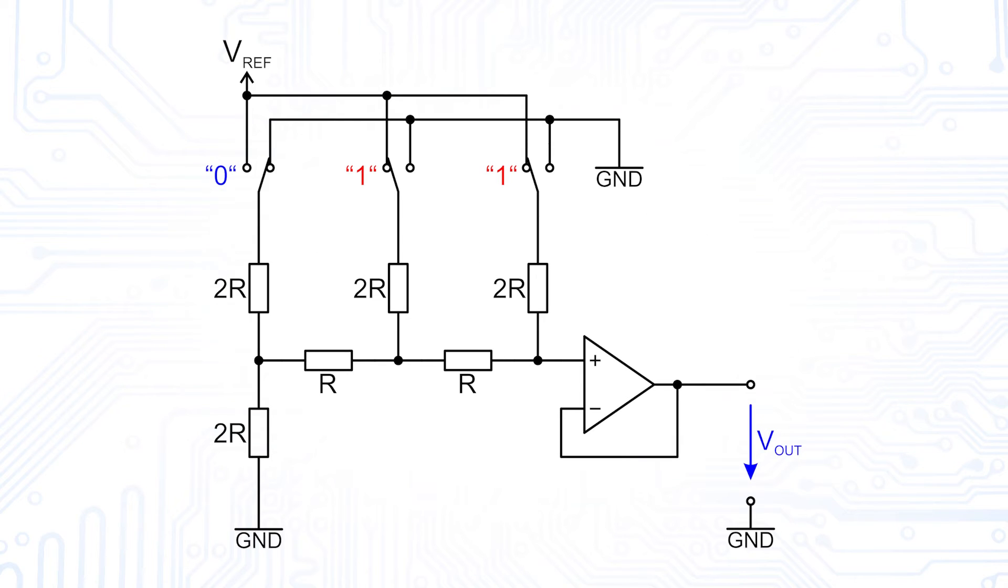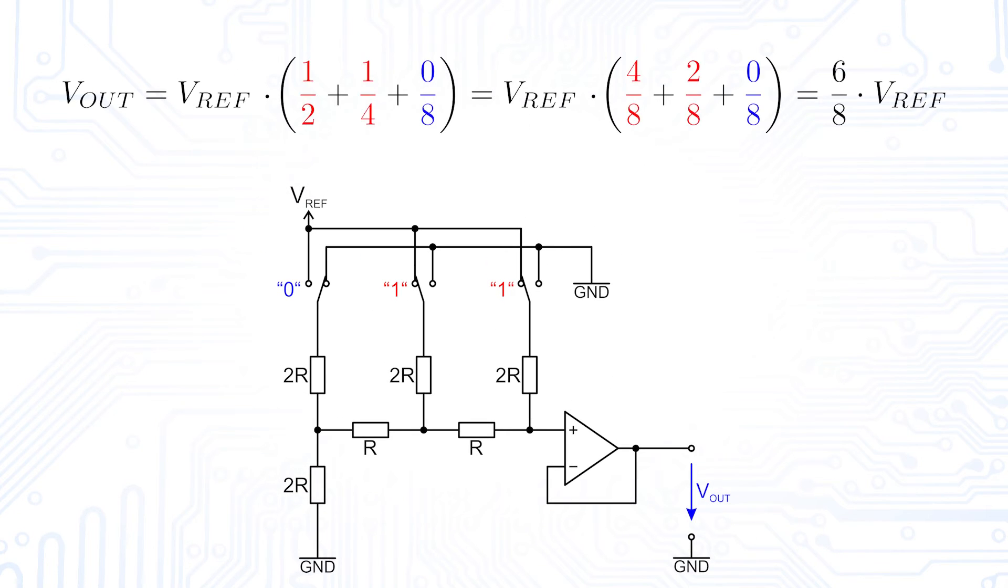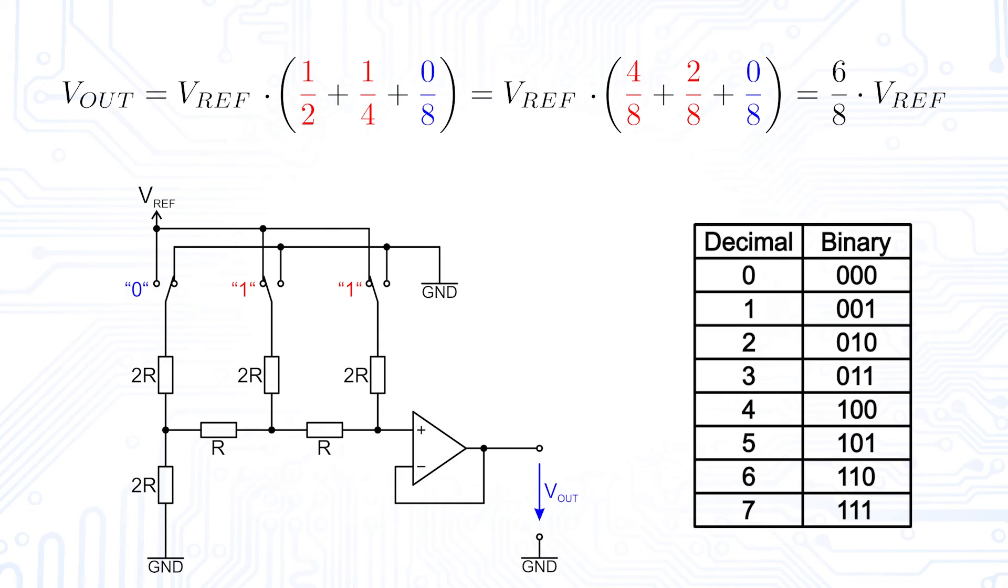In the example shown here with a 3-bit DAC which is set to code 110, we can apply the equation we just developed. Note the position of the switches, where the blue switch is connected to ground and the red switches are connected to Vref. Putting this into the equation, the DAC output is 6 over 8 of the reference voltage. This is exactly what we would expect for the output voltage for the binary code 110 in a 3-bit DAC.